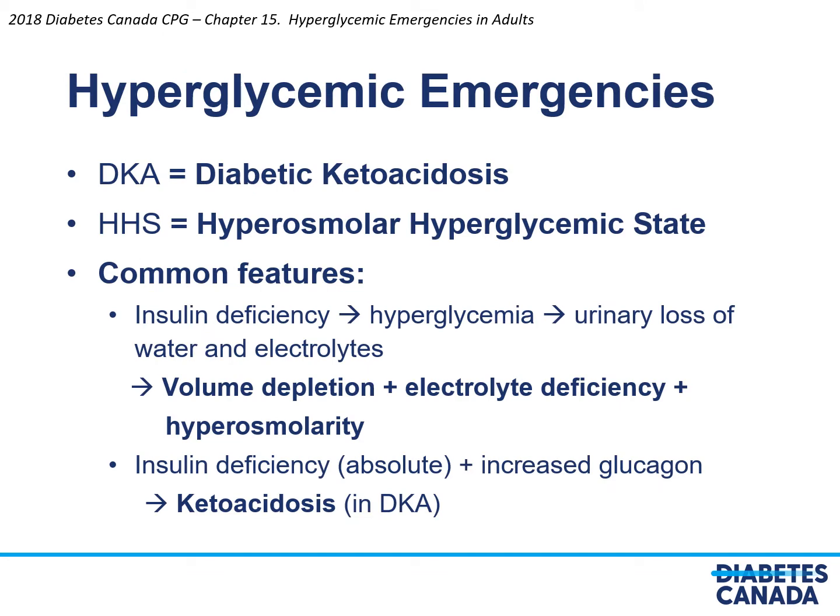Hyperglycemic emergencies include DKA, or diabetic ketoacidosis, and HHS, hyperosmolar hyperglycemic state. Common features are insulin deficiency leading to hyperglycemia, which results in urinary loss of water and electrolytes, causing volume depletion, electrolyte deficiencies, and hyperosmolarity. Additionally, absolute insulin deficiency and increased glucagon allow the development of ketoacidosis in DKA.